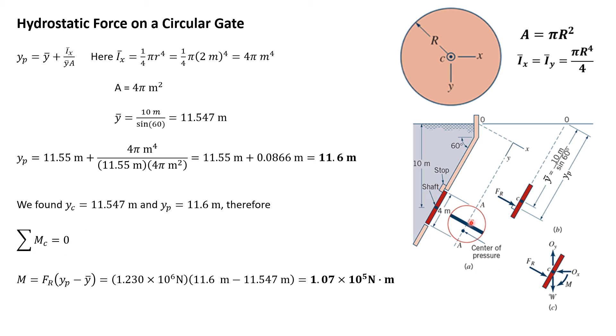If you sum moments about the center of the shaft, you have F_R times (y_p - ȳ). This is ȳ, and y_p is where the reaction force is applied. Here's your lever arm - it's simply (y_p - ȳ) times F_R. When you calculate this out, you get 1.07 × 10⁵ newton-meters for the moment. Good problem.